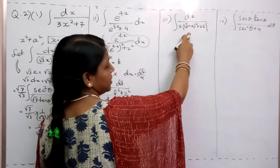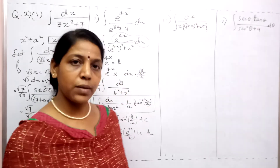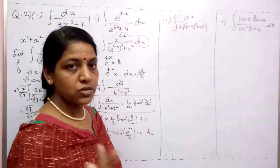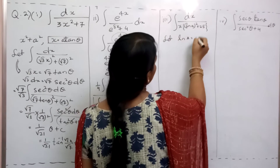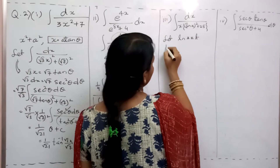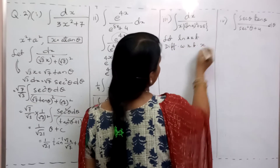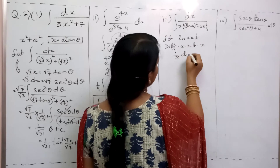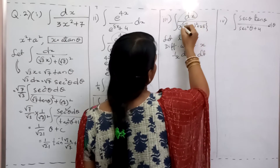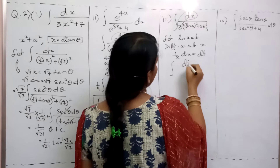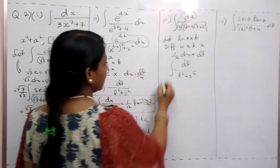Now let us see the third bit. From the question itself, if you assume ln x as t — the differentiation of ln x is 1/x, which is already present in the numerator. So assume ln x = t. Differentiate with respect to x: (1/x) dx = dt. Now it is already present here — substitute it: dt / (t² + 5²).